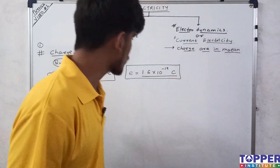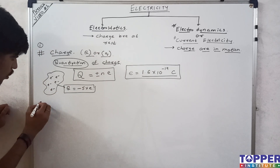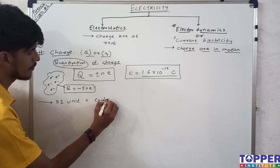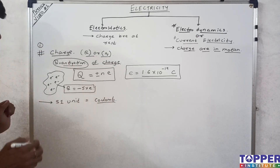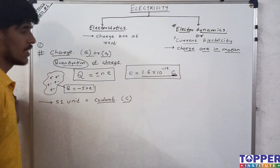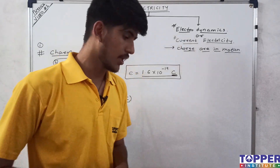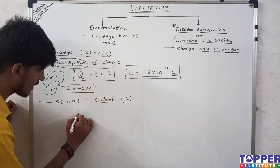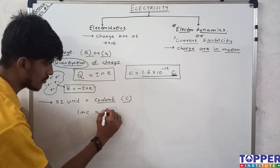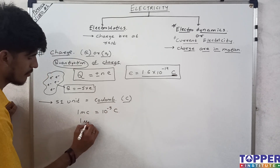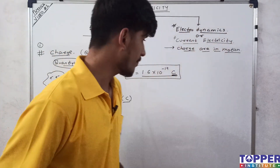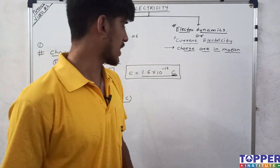An important property of charge: it is denoted by +Q or -Q. Its SI unit is the coulomb, named after the scientist Charles-Augustin de Coulomb, written as capital C. Smaller units also exist: one milli-coulomb = 10⁻³ coulombs, and one micro-coulomb = 10⁻⁶ coulombs. These are the smaller units of charge you should know.